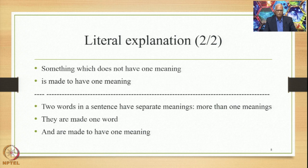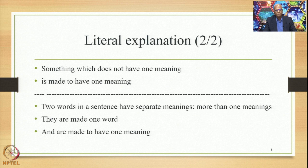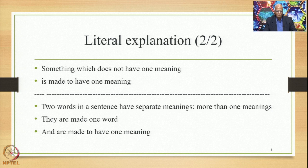This is how the word Ikarthi Bhava is derived in Paaninian grammar. What it implies is: something which does not have one meaning is made to have one meaning. Thus we have two words in a sentence with separate meanings — obviously more than one. In the process of compounding, these two words are made one, and similarly two word meanings are made to have one meaning. This is Ikarthi Bhava — an important feature assuming the merger of two elements as far as meaning is concerned.